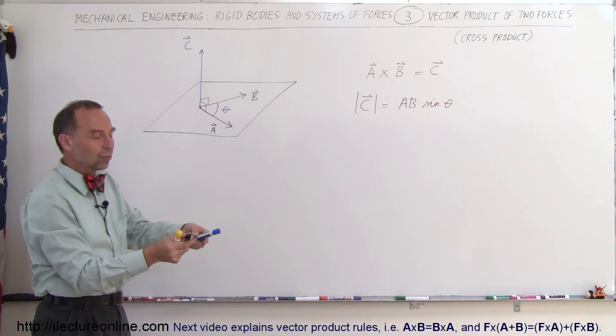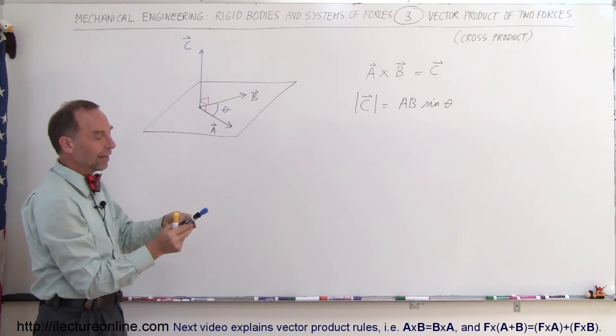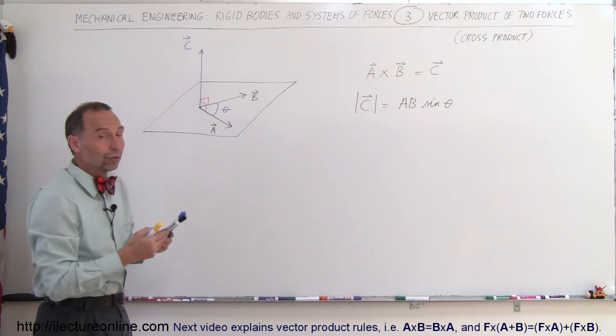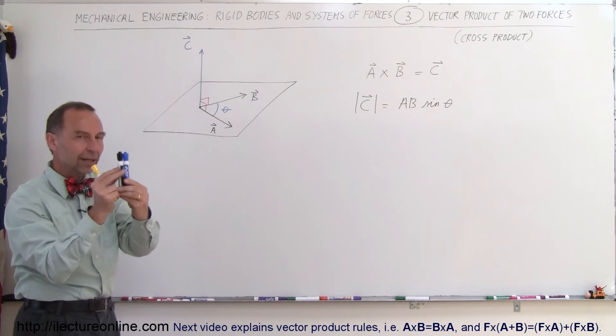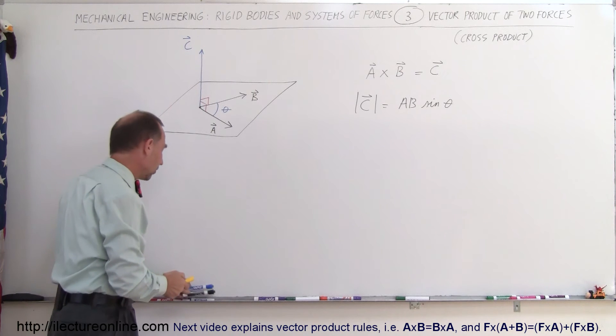As the angle gets smaller between the two vectors, vector C will become smaller and smaller. And eventually when the two vectors are parallel to each other, the cross product or the vector product of two vectors that are parallel is equal to zero because the sine of the angle between them will be zero as well.